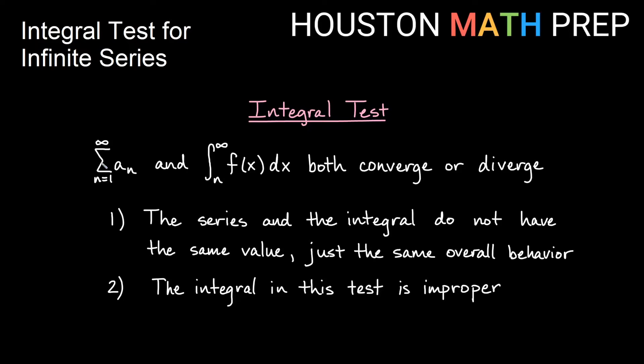But they do not have the same value if they converge. So if you do the integral test and you find that the integral converges to the value 7, that doesn't mean that your series adds up to 7. It just simply means that they have the same overall behavior. One thing you'll notice is that we have an infinite bound in our integral if we are doing an infinite series. So the integral in our integral test will be an improper integral. We just want to make sure that you're aware of how to do limits with bounds and that you're comfortable with improper integrals to do the integral test.